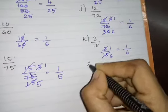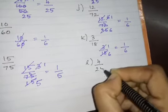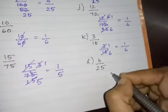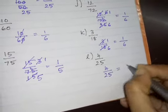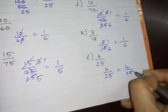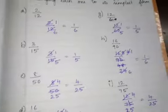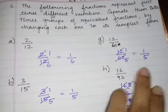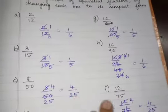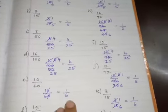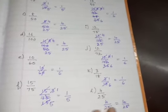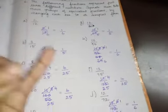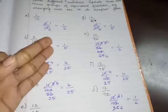Next, L is 4 by 25. Can we simplify 4 by 25? No. So the simplest form of 4 by 25 is 4 by 25. From all of this, you can check: the simplest forms are 1 by 6, 1 by 5, 4 by 25, 1 by 6, 4 by 25, 4 by 25, 1 by 6, 1 by 6, 1 by 6, 1 by 5, 4 by 25. Overall, the three simplest forms are 1 by 6, 1 by 5, and 4 by 25.